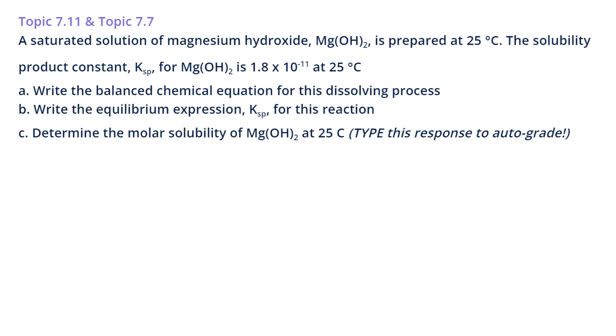Part A asks us to write the balanced chemical equation for the dissolving process. So I am going to start talking about the dissolving of solid magnesium hydroxide in water. So my solid magnesium hydroxide, when it dissolves, it's going to break apart and form magnesium ions and hydroxide ions.